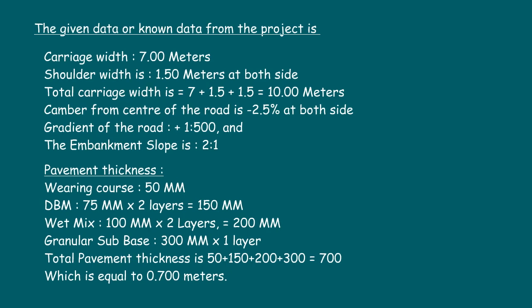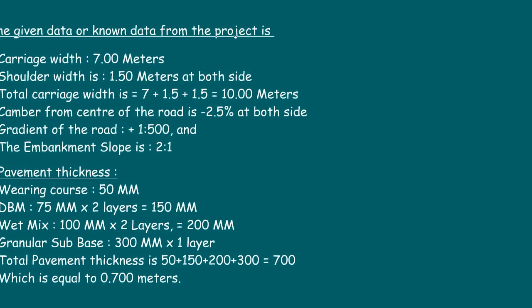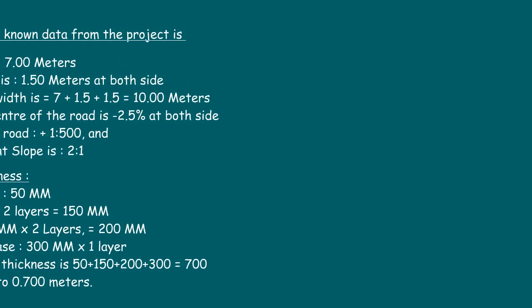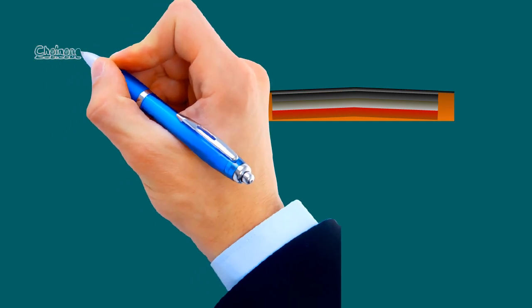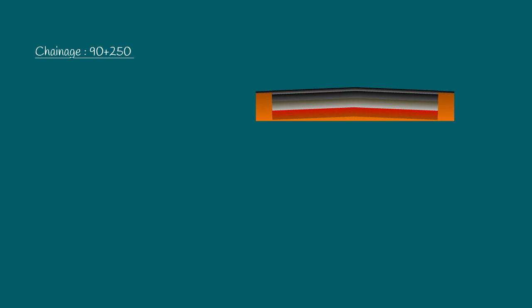Now we are going to calculate the quantity of earthwork for a 25-meter stretch. Chainages starting from 90+250 to 90+275. The known data from the project detail is: first chainage 90+250, FRL (finished road level) is 71.2.